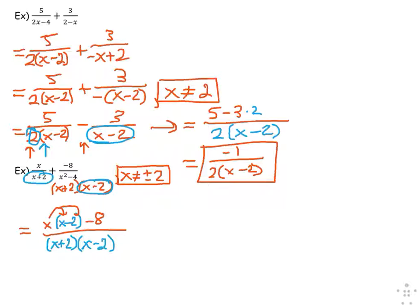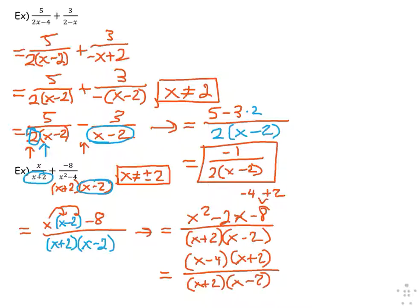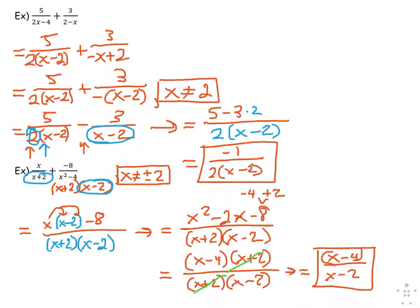Distribute the x minus 2. Before boxing my answer, I inspect to see if the numerator factors — the factors of negative 8 that sum to negative 2 are negative 4 and positive 2. So I believe we will find a common factor with the denominator. I divide out like factors — I've already excluded up here so I won't miss any exclusions. The final answer is x minus 4 over x minus 2. The parentheses aren't needed anymore because the fraction bar itself is a grouping symbol, making them redundant.